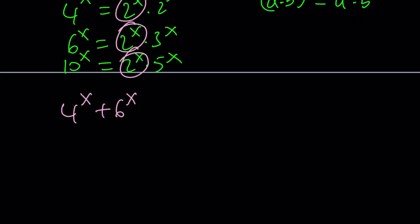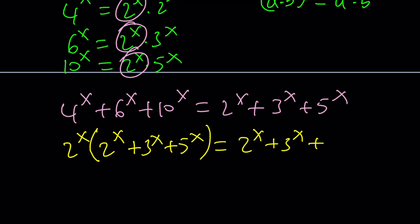Was it 4, 6, 10? Yep. Sometimes you may not know the numbers even though you come up with a problem. Easy to forget. Okay, now, I'm going to go ahead and factor out the 2 to the x. And from here, we're going to get 2 to the x plus 3 to the x plus 5 to the x. And then that is equal to 2 to the x plus 3 to the x plus 5 to the x.